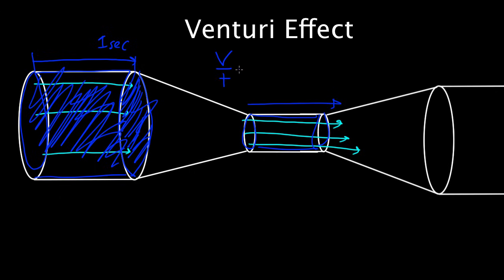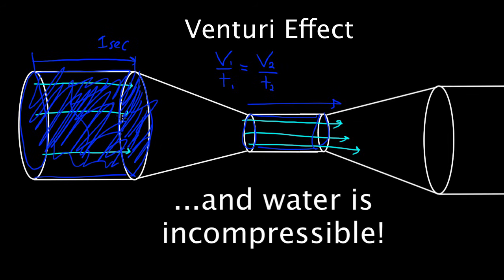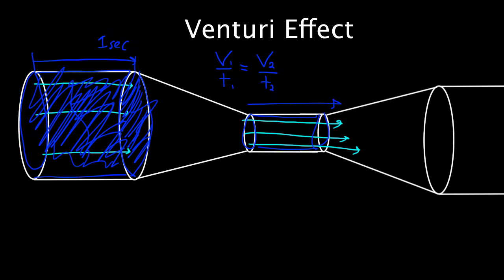And the volume flow rate's got to stay the same. The volume per time flowing through one region of the pipe has got to be the same as the volume flow rate through some other region of the pipe, because this water's got to go somewhere. It doesn't just disappear in here. It's got to keep flowing. That means the important part is the water flows faster through the constricted region, sometimes much faster. The smaller this is compared to this original radius, the faster the fluid will flow through here.